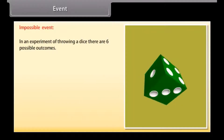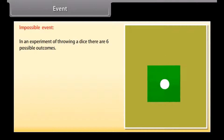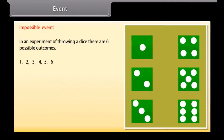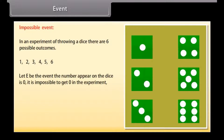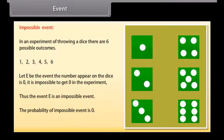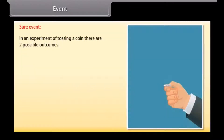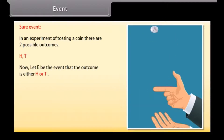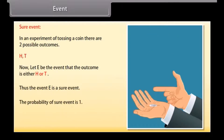Impossible event: in an experiment of throwing a dice, the possible outcomes are 1, 2, 3, 4, 5, 6. Let E be the event that the number appearing on the dice is 0. It is impossible to get 0, so event E is an impossible event. The probability of an impossible event is 0. Sure event: in an experiment of tossing a coin, the possible outcomes are H and T. If E is the event that the outcome is either H or T, then E is a sure event, and the probability of a sure event is 1.